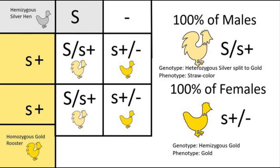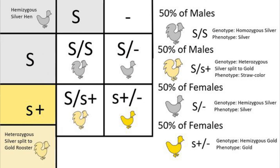The fourth pairing is a gold male bred to a silver female. In this pairing, 100% of the female offspring will be gold, because they get it along with their dad's Z chromosome, and 100% of the male offspring will be heterozygous silver split to gold and straw colored, because they get one Z chromosome from each parent.